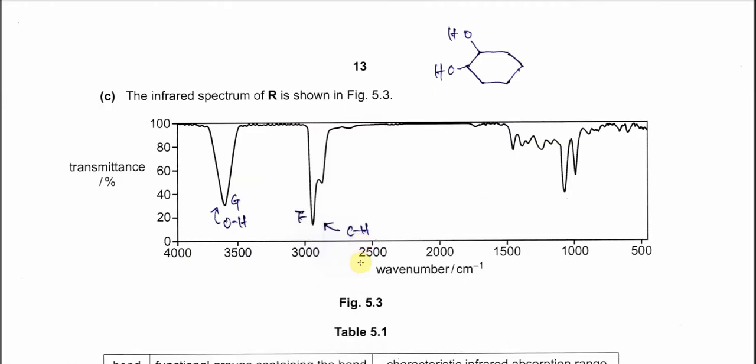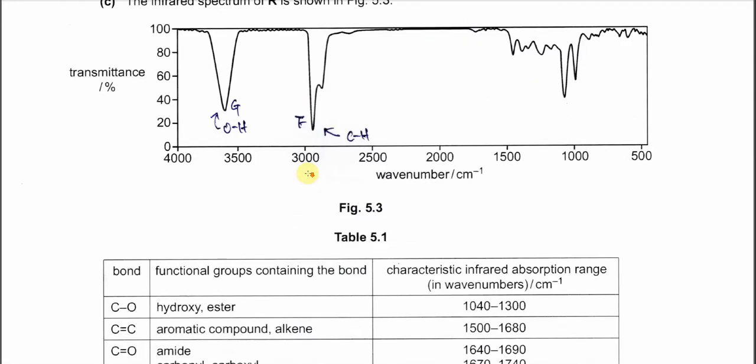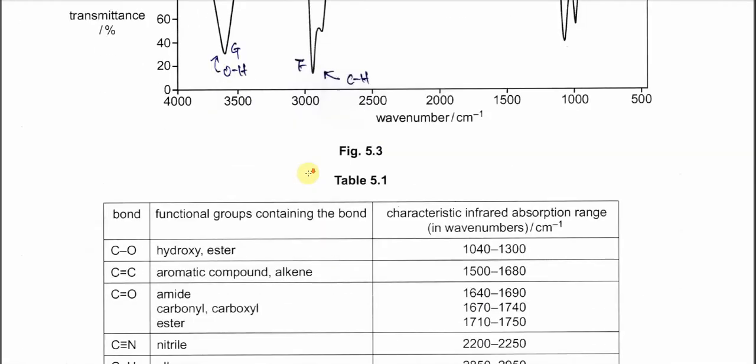Part C. The infrared spectrum of R means this one the diol is shown in figure 5.1. So from here we know that the bromine here around 3600 something. So it's for the OH bond. OH bond in this molecule this OH bond.